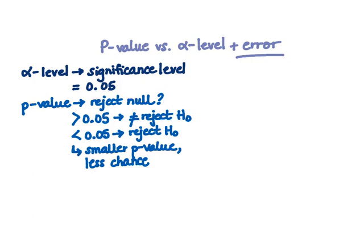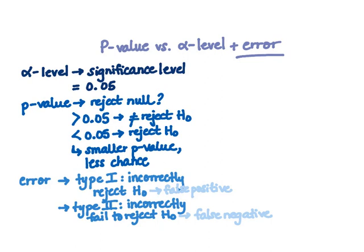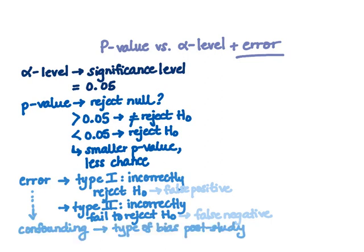There are two types of error: Type 1 incorrectly rejects the null hypothesis — generally referring to false positives. Type 2 incorrectly fails to reject the null — generally referring to false negatives. The probability of making a Type 1 error is equivalent to the significance level, or alpha. We document error because it's important to reduce bias within a study, such as confounding, which is usually found post-study at the data analysis stage.